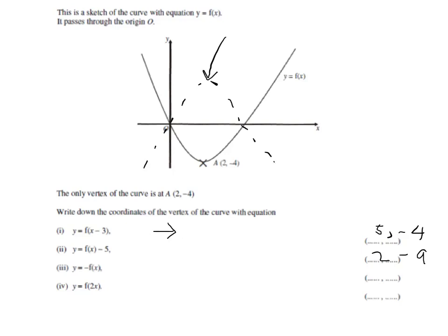So, the vertex will now be at the top. It will still be at 2, but instead of being at minus 4, it will be at plus 4. So, the answer to that, then, is (2, 4).